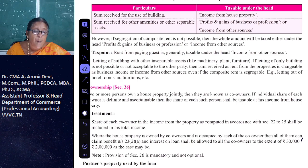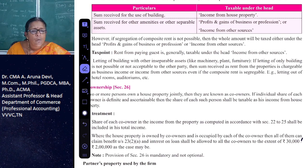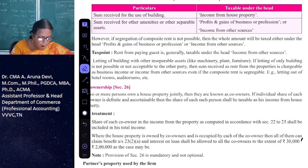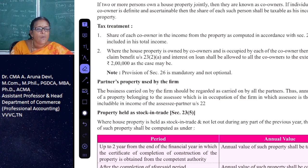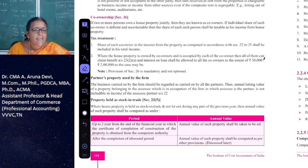Interest on loan is deductible from the gross income from house property when computing taxable income. Regarding partners' property used by the firm: since the firm and the partner are separate entities, the income is not includable in the income of the assessee partner — it does not fall under income from house property.